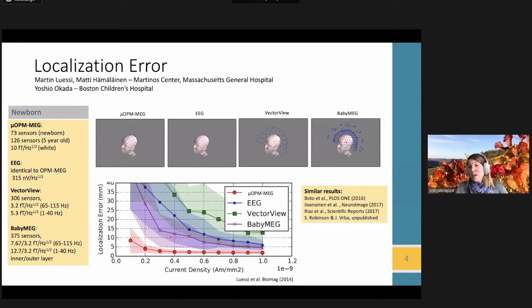Similar results have been found in a variety of other studies since then. But all of these studies conclude that with an OPM-based system and sensitivities around 10 femtotesla per root hertz which is realistic, you can reach much higher signal power, much higher information capacity, much lower minimum norm spread functions when you move these sensors directly on the scalp. And that is exciting.